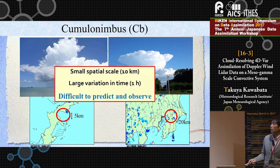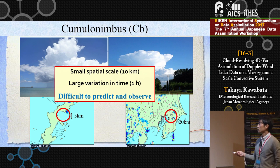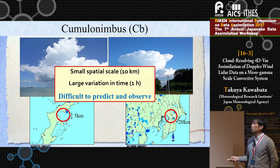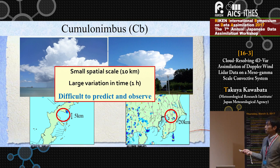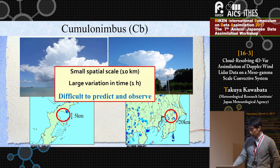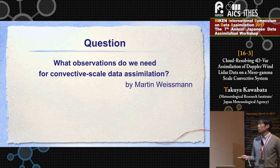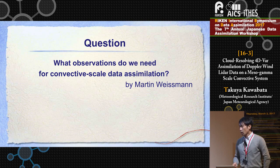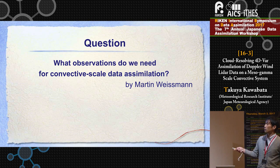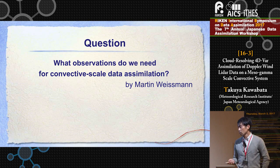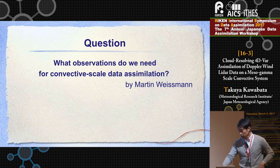These phenomena have a small spatial scale of around 10km and large variation in time of about 2 hours, so we have difficulty predicting and even observing such systems. Martin Weizmann asked: what observations do we need for convective-scale data assimilation? I will show one answer to this question through an observation system experiment, not a statistical result.